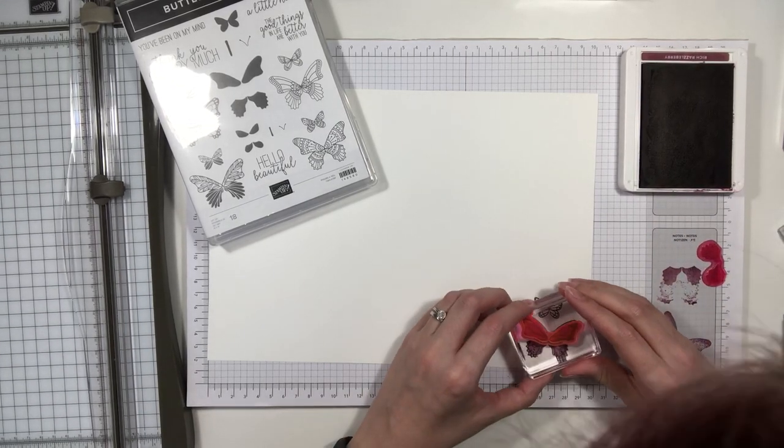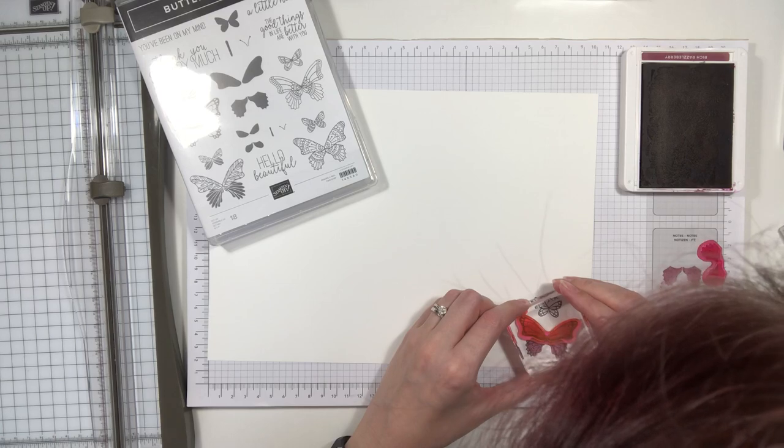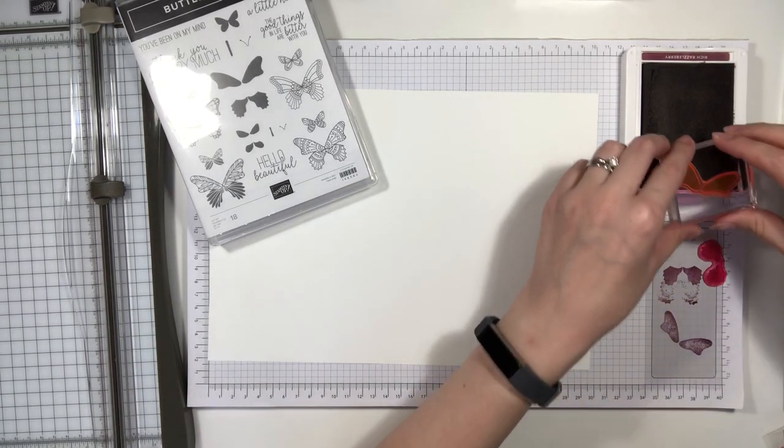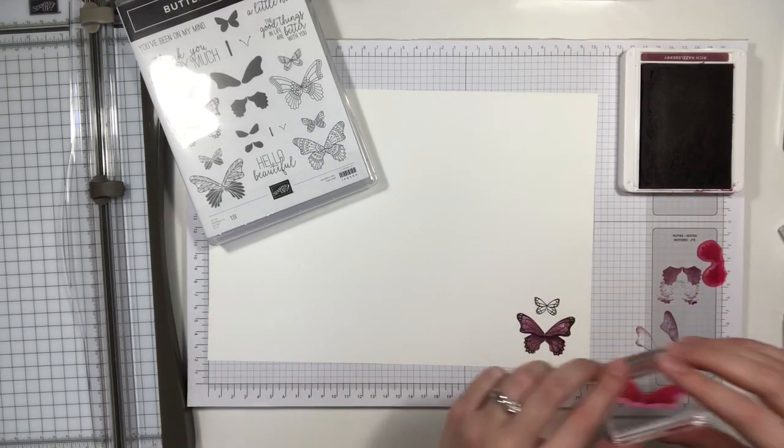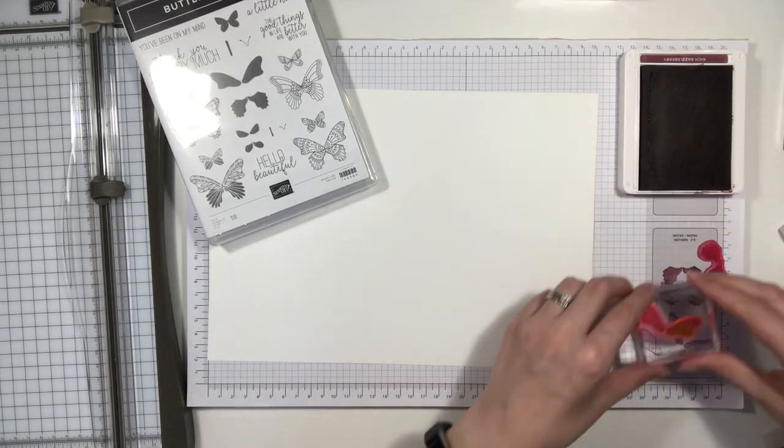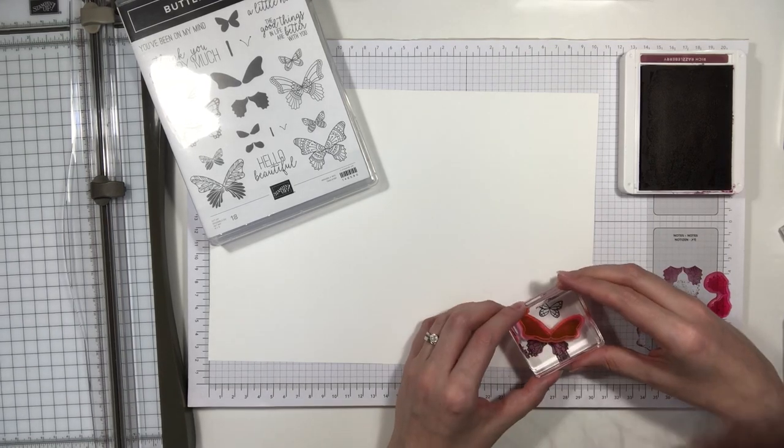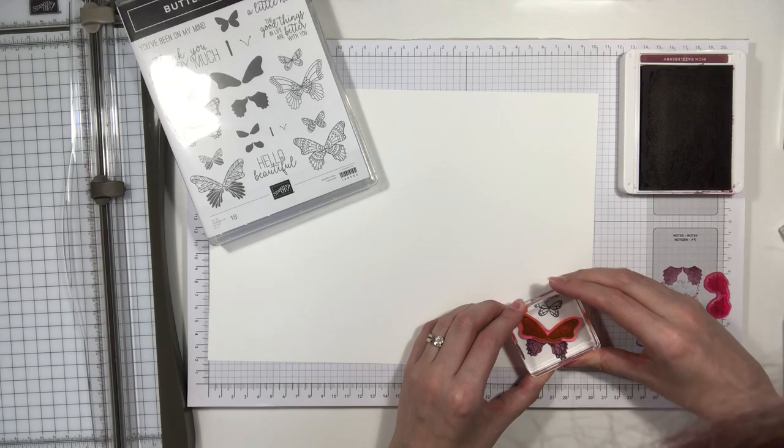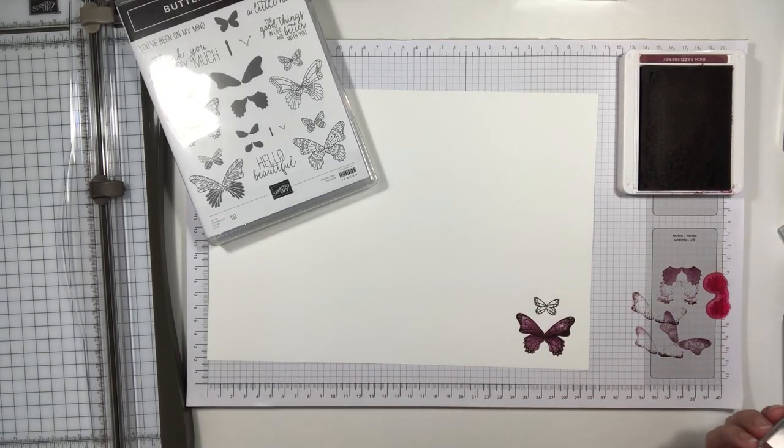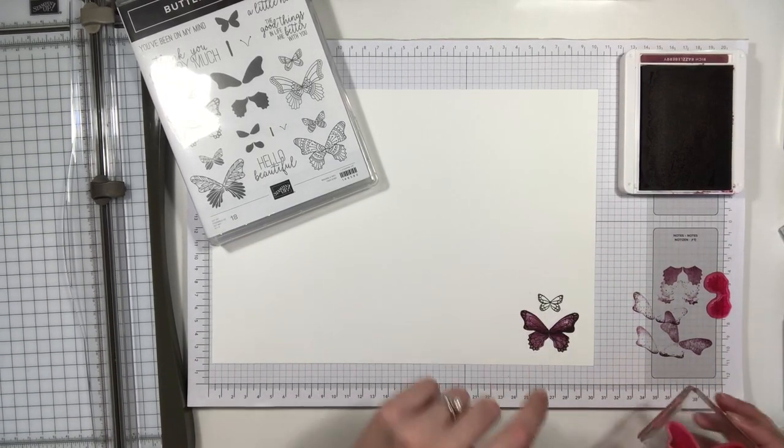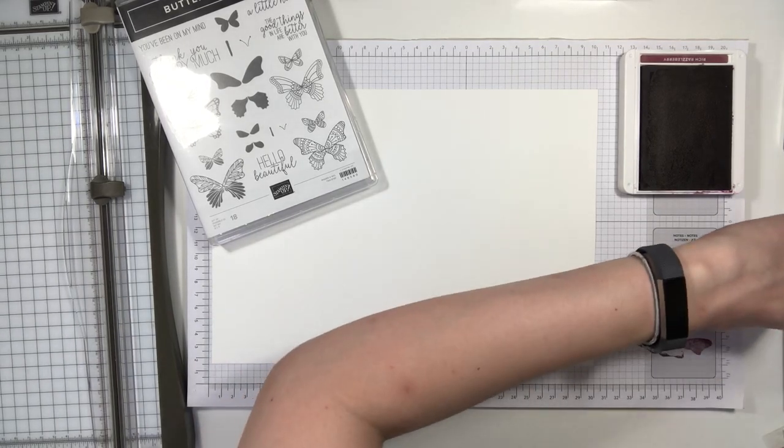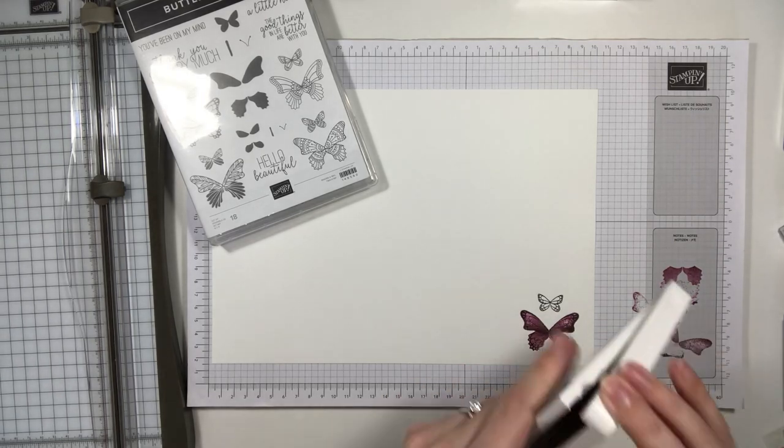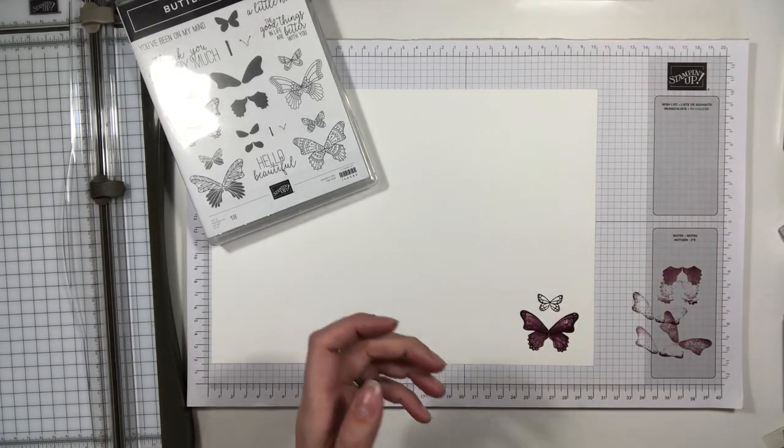I'm just going to do the same again but the other way around. There's my butterfly. I'm not actually going to color in the little butterfly because we don't need him, so that's all you need to do inking and stamping on this one because it's mostly a 3D project.